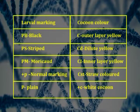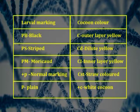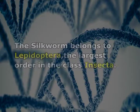For larval markings, the P locus is involved: P^B stands for black color, P^S stands for stripe, P^M stands for morricone, +P for normal marking, and plain P for plain marking. For cocoon color, the C locus alleles are: C for outer layer of the cocoon, C^D for dilute yellow, C^I for inner layer cocoon, C^ST for straw colored, and +C for white color.